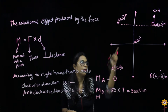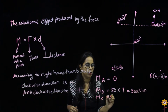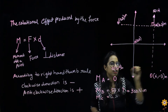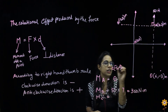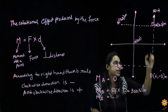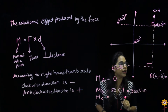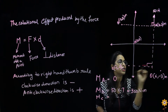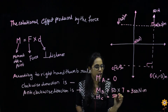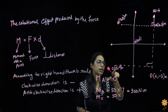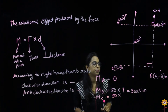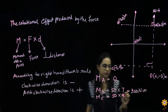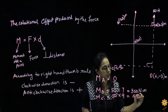Next is the moment of the same force about point C. Looking at the line of action of the force, the perpendicular distance for point C — the distances are minus 5 and 4, giving a total perpendicular distance of 9. The direction is again anticlockwise, so it is positive. Therefore, the moment about C is 450 newton-meters.